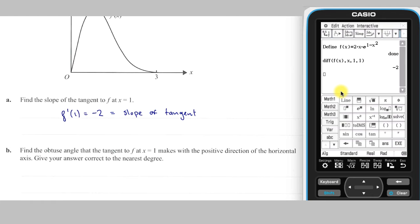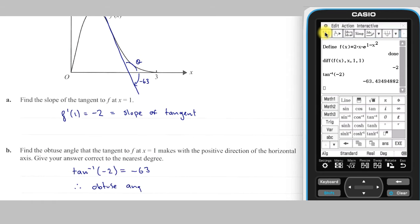Part b: We now need to find the obtuse angle that this tangent makes with the positive x-axis using the relationship m = tan(θ). Based on this, I need to find the arctan of -2 with my ClassPad working in degrees. As we are asked for the obtuse angle to the nearest degree, the answer is 180 - 63, which is 117 degrees.